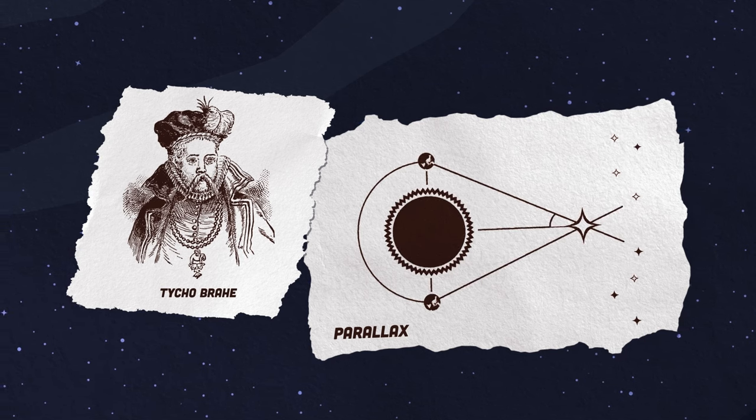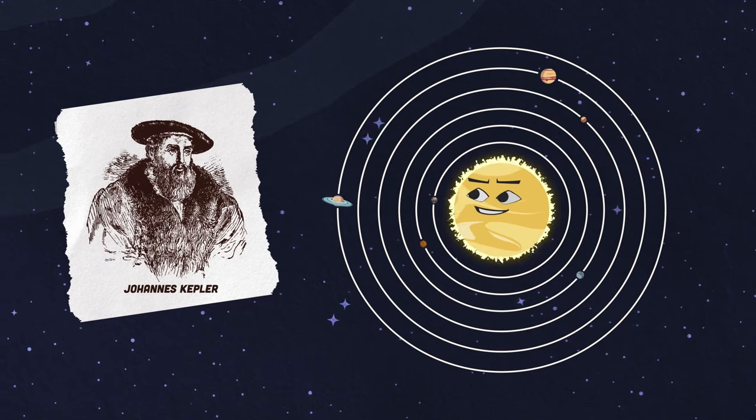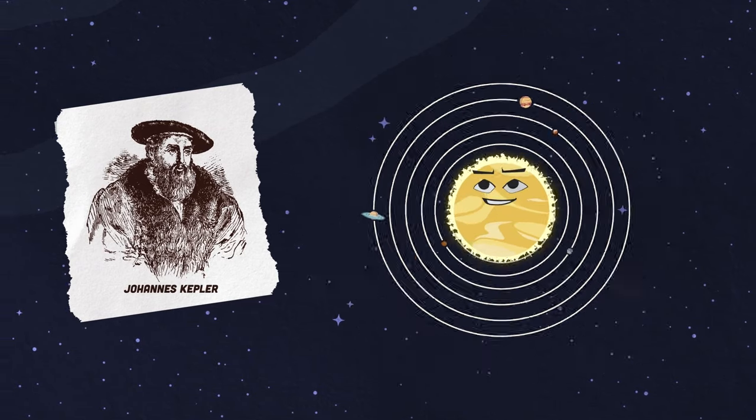Johannes Kepler used Tycho's information and found this: the orbits of the planets and Earth were ellipses.